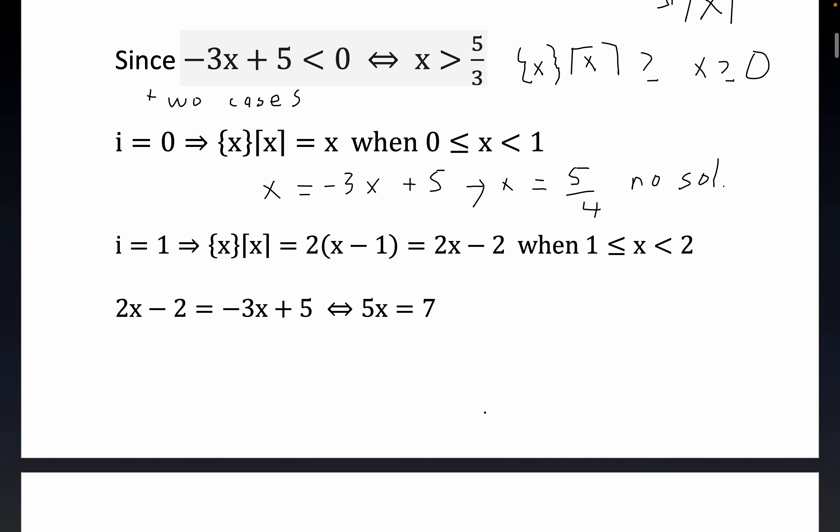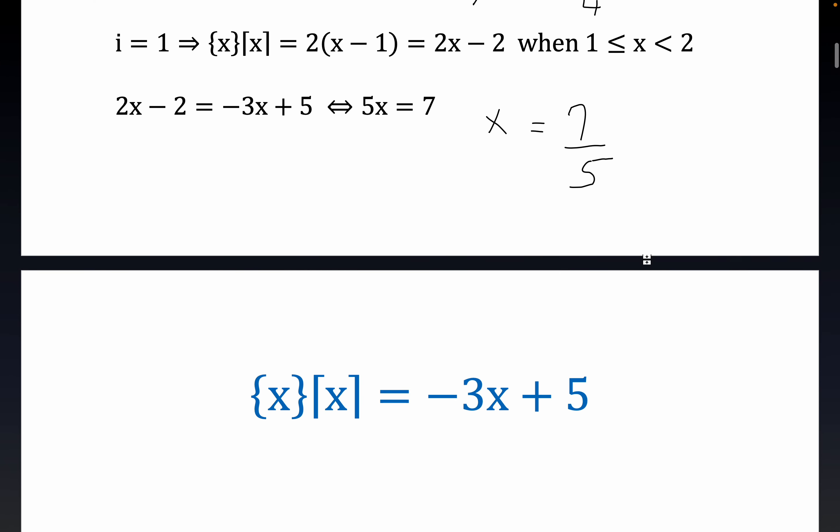And so when we solve this out, we actually get x is equal to 7 fifths. Now this is possible because 7 fifths is between 1 and 2. This is a possible solution because it falls within the domain of interest for this particular stage of the problem. So let's check this solution and see if it works out.